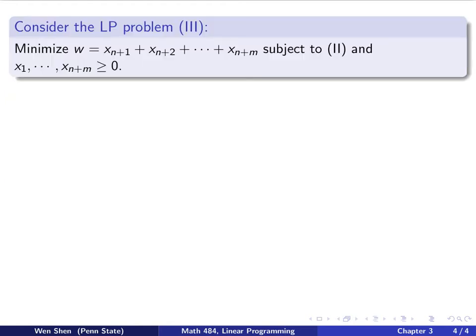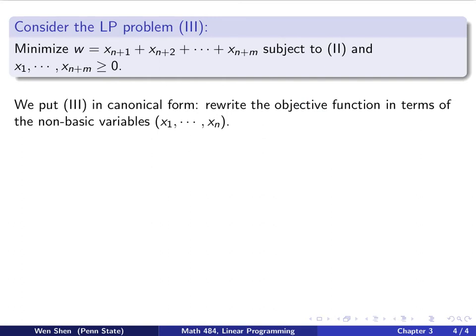Now here comes the real trick. We want to associate the constraint in 2 with the following linear programming problem, which we call 3. We want to minimize a quantity we call w here, which is just the sum of all the artificial variables that we introduced. So just add them up, and then use set 2 as the constraint, and require all variables to be restricted.